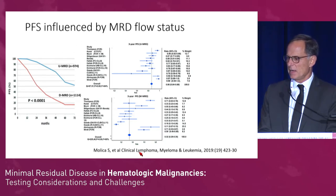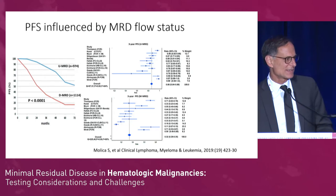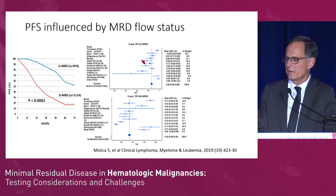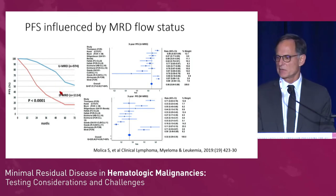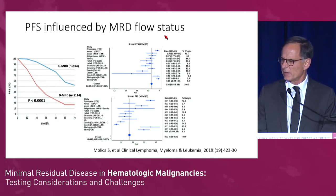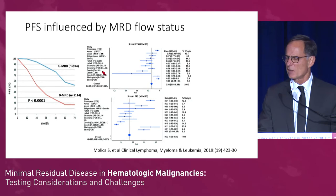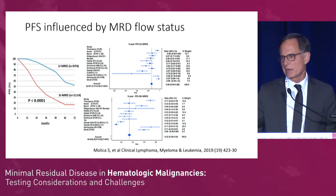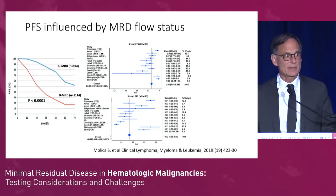Looking at MRD flow at 10 to the minus fourth sensitivity, a recent meta-analysis looked at individual trials — FC versus FCR, BR versus FCR, chlorambucil-obinutuzumab trials — all trials for which there is MRD measurement data. Patients with undetectable MRD do much better in terms of progression-free survival compared to detectable MRD. In fact, MRD is the single best predictor of PFS with most chemo immunotherapy regimens — better than traditional response criteria of CR or PR.